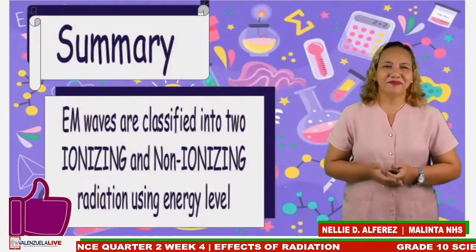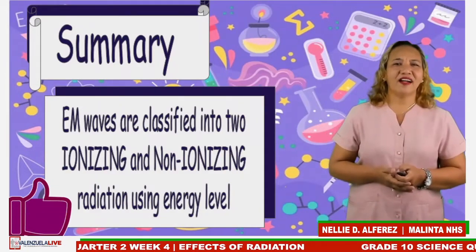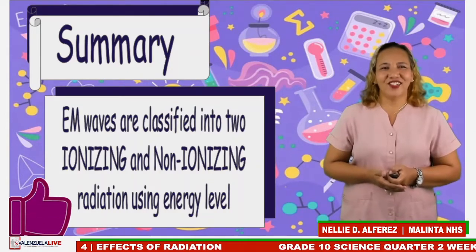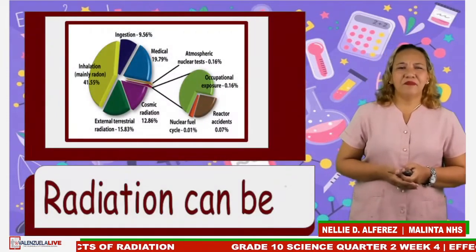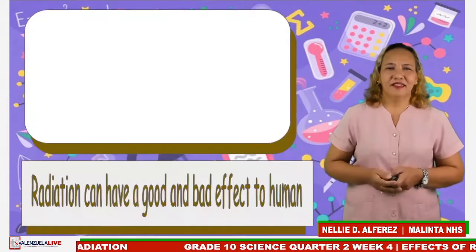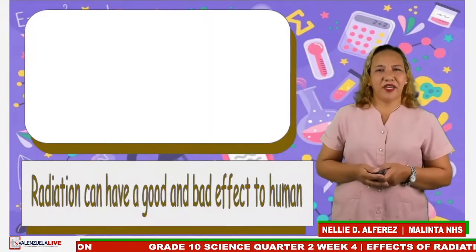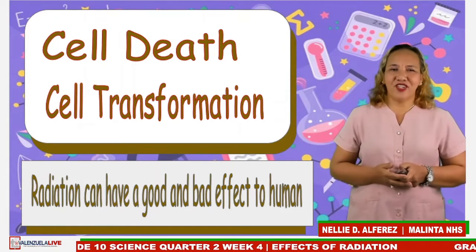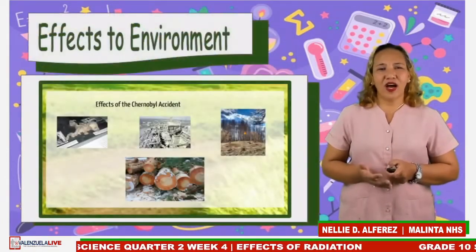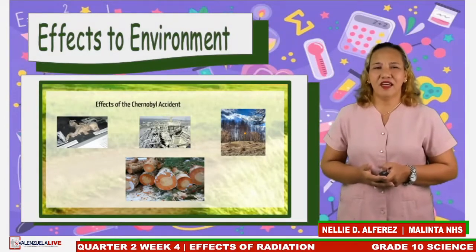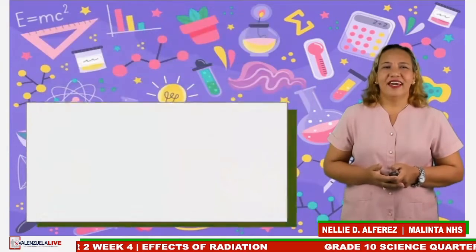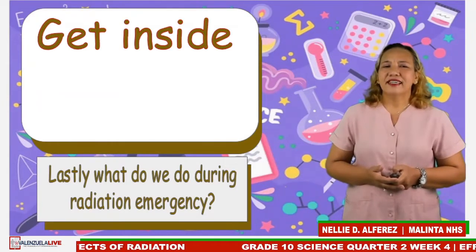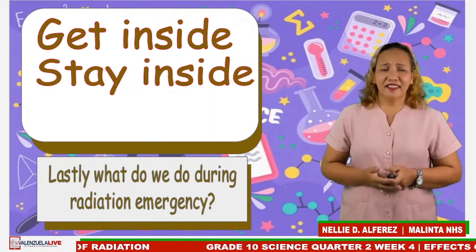To sum up: EM waves are classified into two — ionizing and non-ionizing radiation using energy level. Radiation can be natural or man-made and can have good and bad effects on humans, including cell death and cell transformation. It can also affect the environment, as seen in the Chernobyl disaster. During an emergency, remember: get inside, stay inside, and stay tuned.